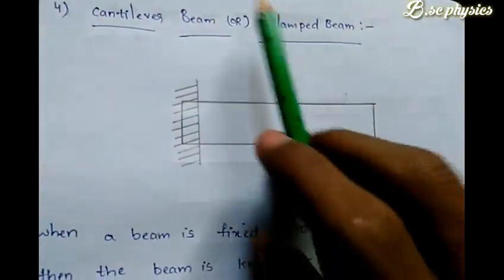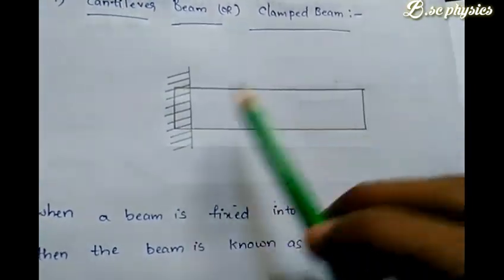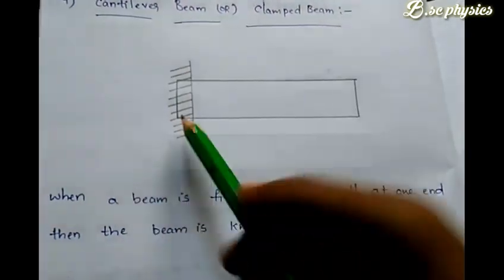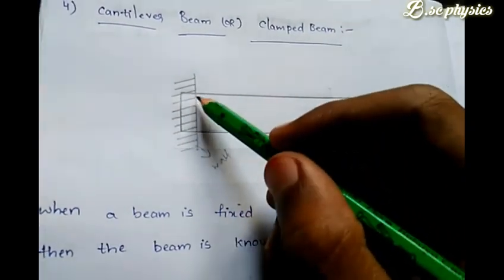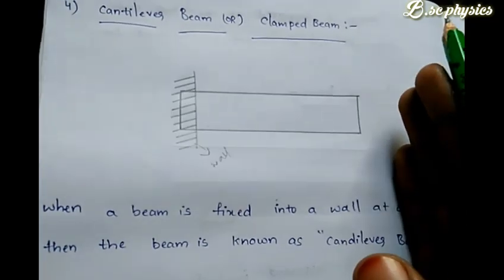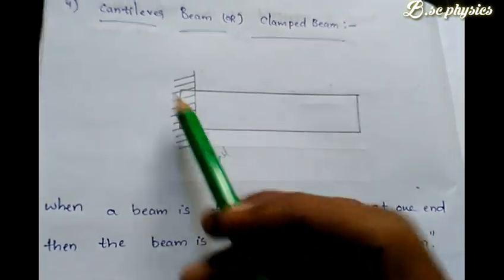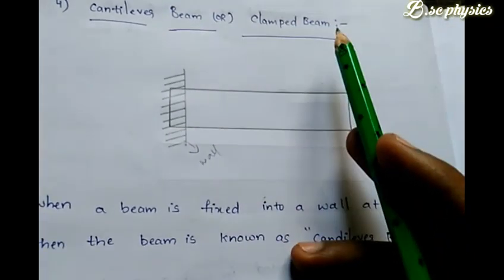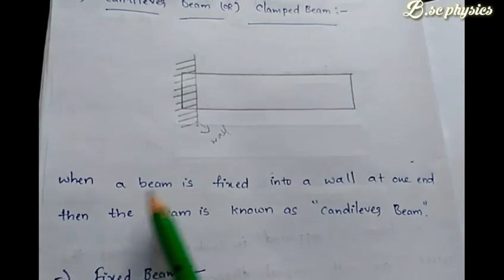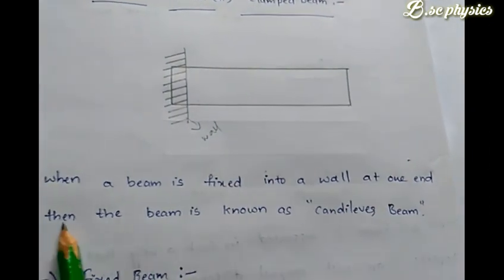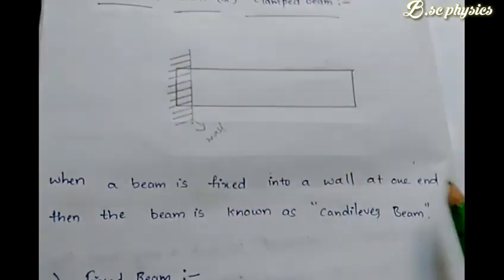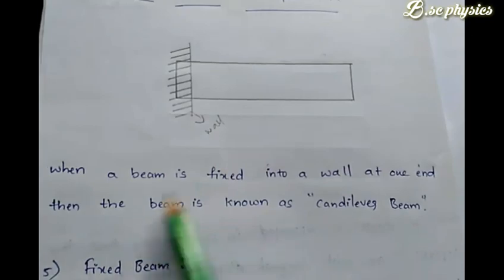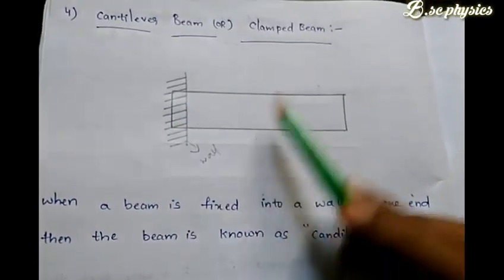The fourth one is the cantilever beam or clamped beam. Here we have a beam where one side is fixed into a wall. When a beam is fixed into a wall at one end only, then the beam is known as a cantilever beam or clamped beam.